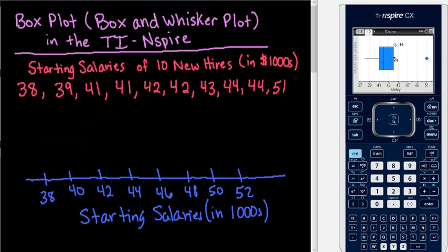If I hover over, it tells me that Q3 is at 44, the median is 42, Q1 is 41, and the minimum point is 38.